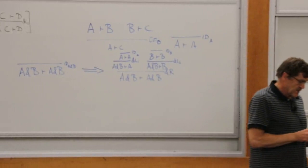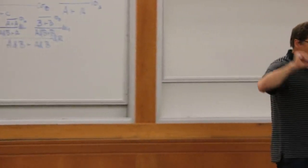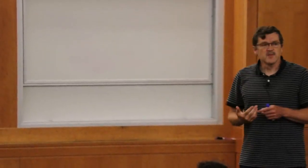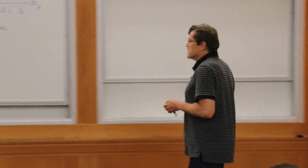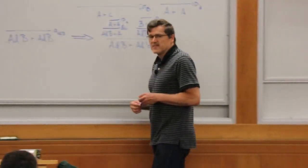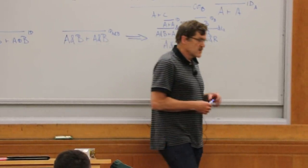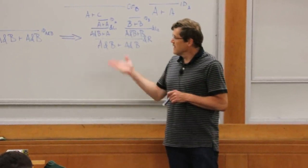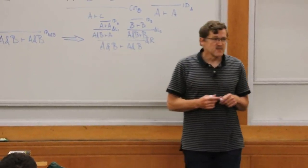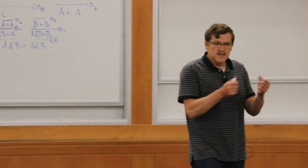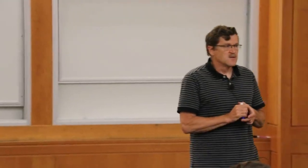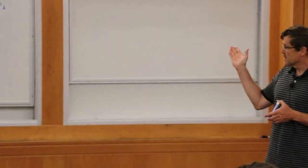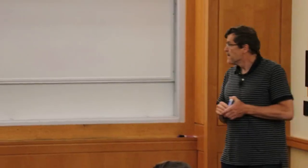So the two things together — cut elimination and identity expansion — form an internal test, without external semantics, that the rules are sound and complete. The terminology in proof theory for this is that the rules are in harmony with each other: the left rules are not too strong (which would violate cut elimination) and not too weak (which would violate identity expansion). They're exactly the right strength. Checking cut elimination alone isn't enough; you also want to check identity expansion.